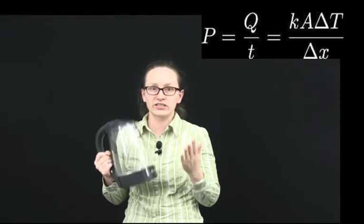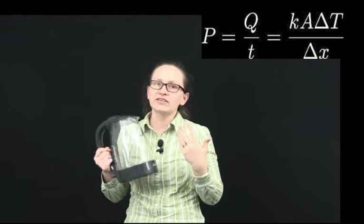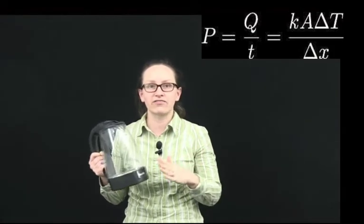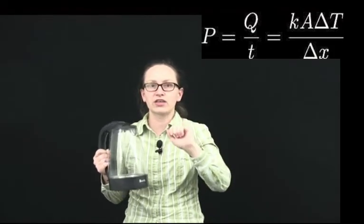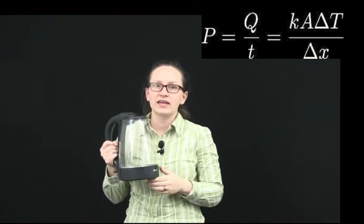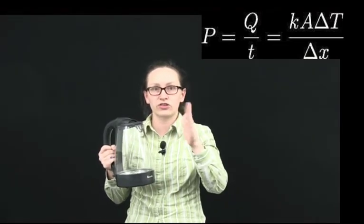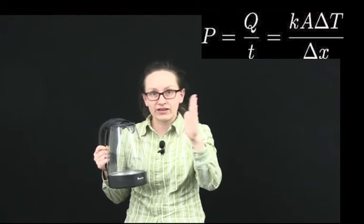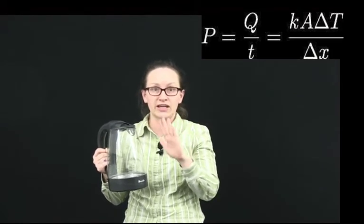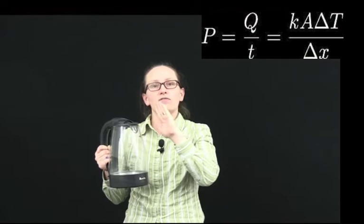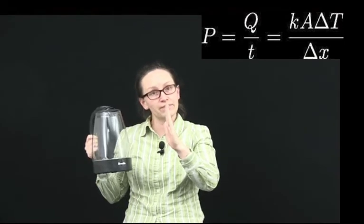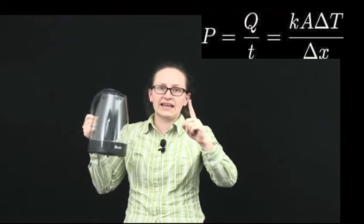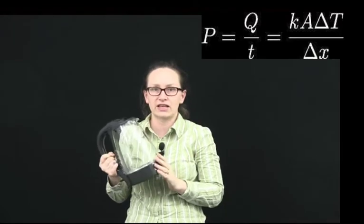There are three main ways that heat can be transferred. The first of these is conduction. The amount of heat which is conducted is given by the power, which is the heat over the time, is equal to k, the thermal conductivity constant, times A, the surface area or cross-sectional area through which the heat is being transferred, times the change in temperature, divided by the length over which the heat is being transferred.